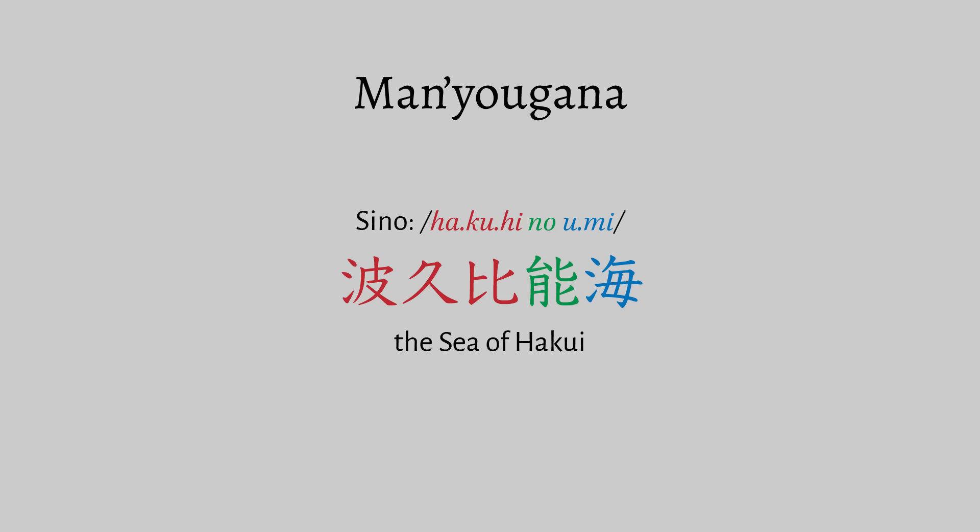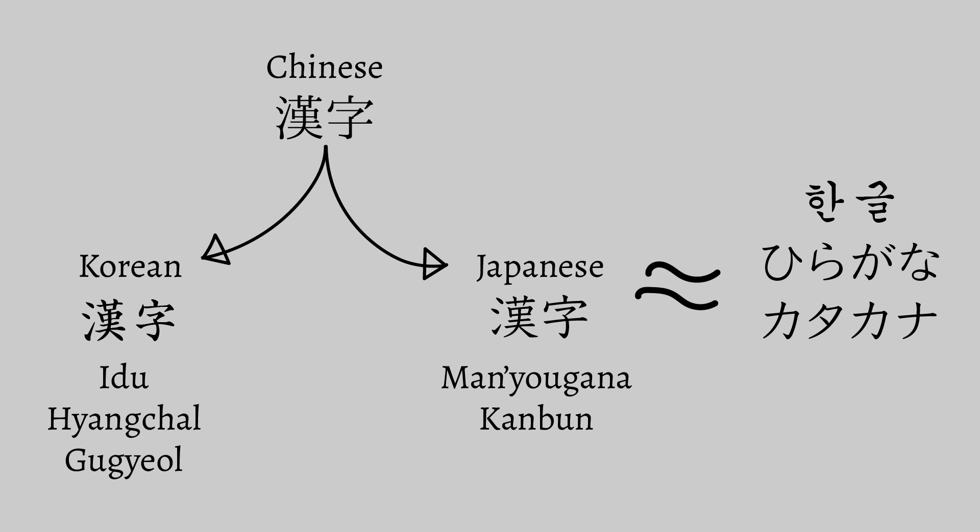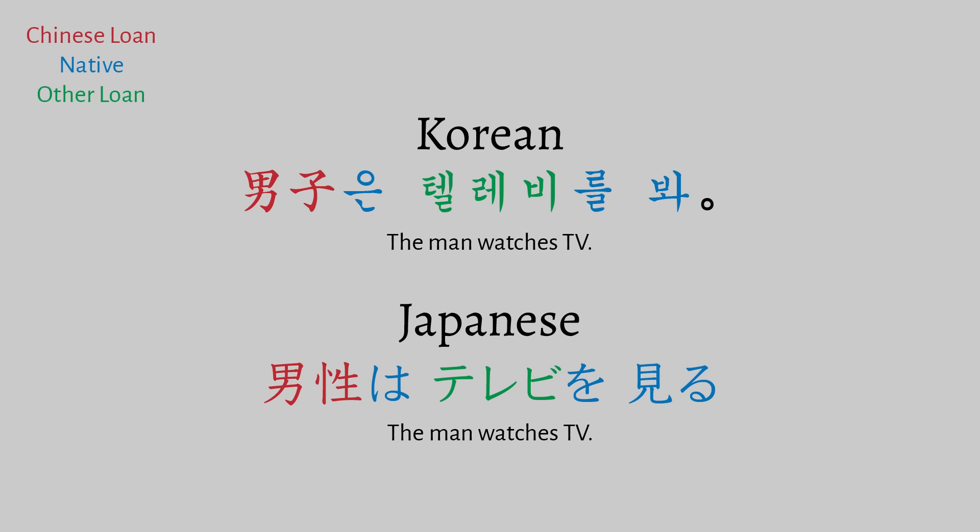In manyogana, each character in a sentence represents a phonetic reading, except for occasional semantic kanji like the character for 'sea,' read as 'umi.' I mention these historical writing systems to show how deeply ingrained hanja and kanji are in both Korean and Japanese history — these methods were still in use until the 20th century, meaning they were used concurrently alongside hangul in Korea, which was created by King Sejong in the 1500s, as well as hiragana and katakana, which descended from manyogana in Japan.